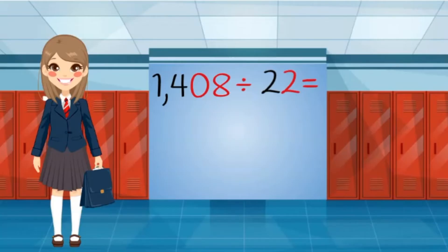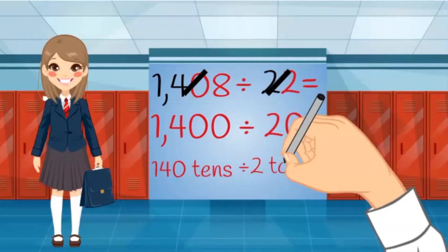Since 22 is close to 20, I make that estimate too. I know I can divide 14 evenly by 2, so these estimates will help me divide. 140 tens divided by 2 tens equals 70.